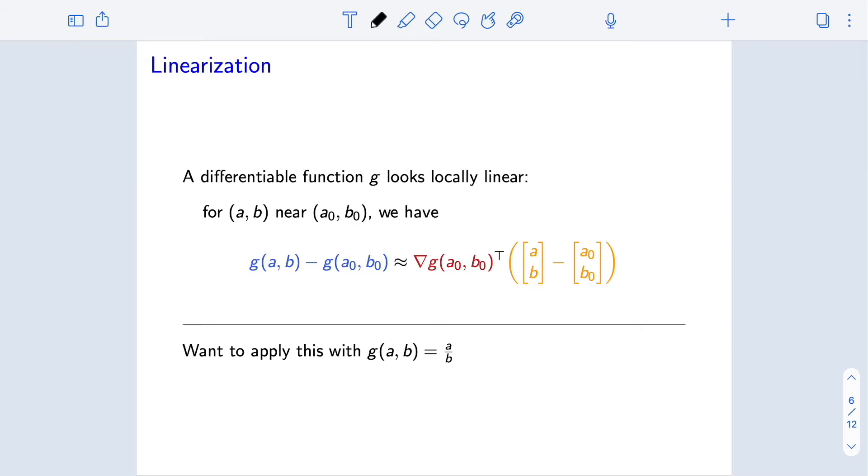So let's remind ourselves how linearization or a first-order Taylor series expansion works. If we have a differentiable function g of two variables, that function will look locally linear. If we consider small perturbations of that function, those can be well approximated by a linear function. So for example, if we have two points, point ab and point a0 b0, and they're nearby, then if we look at the difference between g of ab and g of a0 b0, this is to first order equal to this linear function. So it's the gradient of g evaluated at a0 b0 times what we can think of as delta, how much of this point a0 b0 is perturbed to get to the point ab.